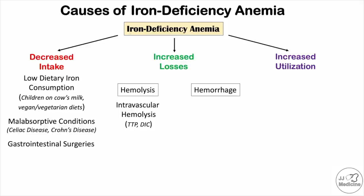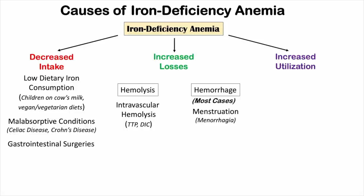Hemorrhage is the most common cause of iron deficiency anemia — most cases will fall in this category. Number one is menstruation, which is why reproductive-age women are more likely to get iron deficiency anemia. Blood losses from each menstrual cycle can result in enough iron loss that the individual doesn't bring in enough to compensate. If a patient experiences menorrhagia, which is excessive menstrual bleeding, this can make it significantly worse.